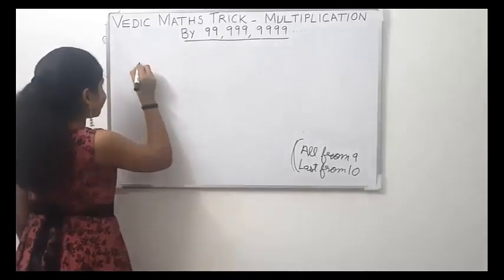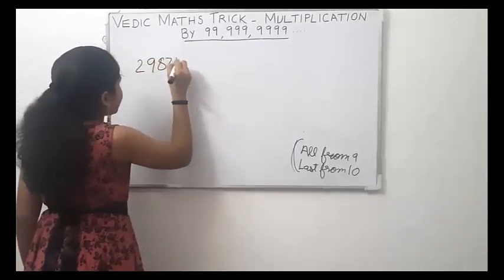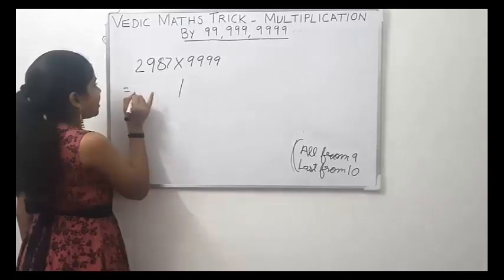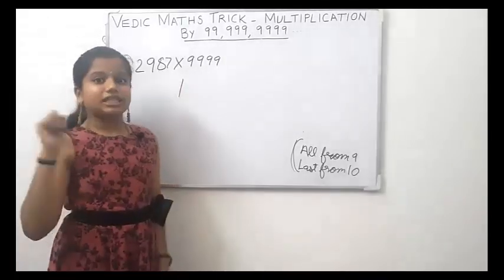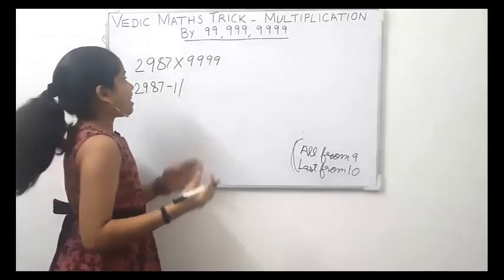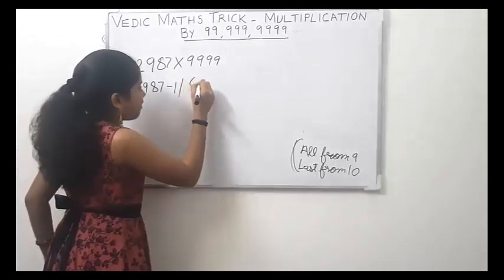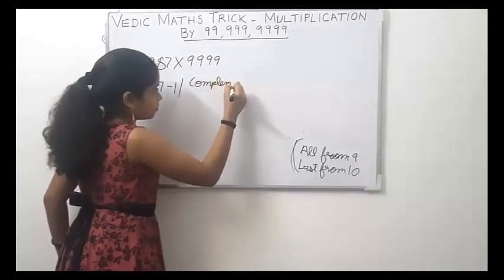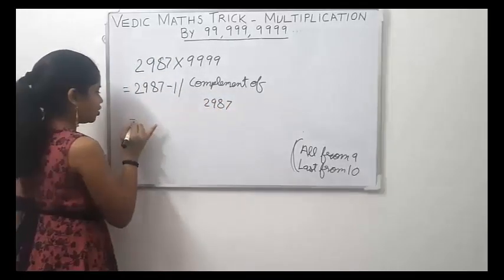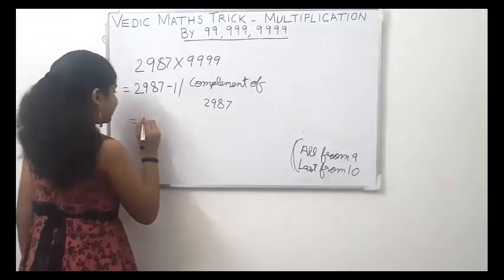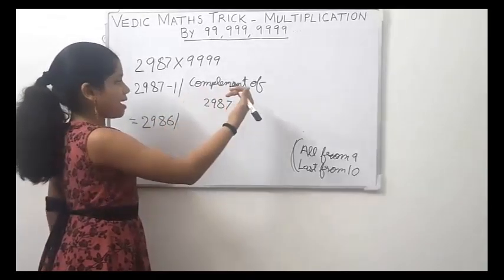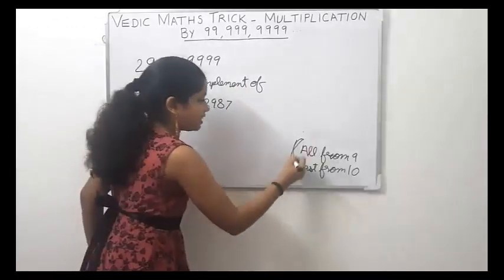Let us take 2987 × 9999. In the left part of the answer, write the predecessor of 2987, or subtract 1 from 2987, which gives 2986. In the right part, write the complement of 2987.